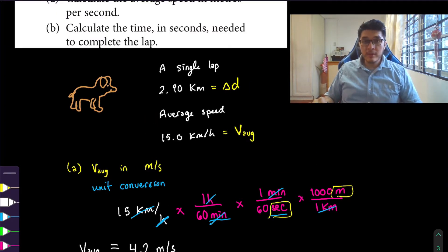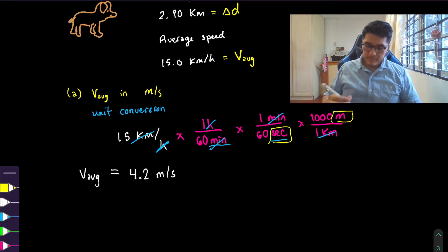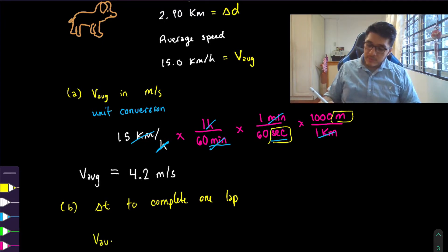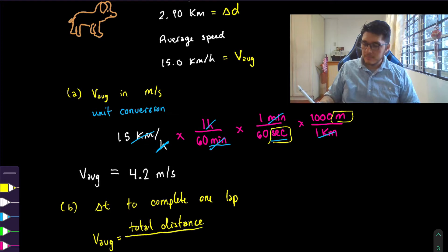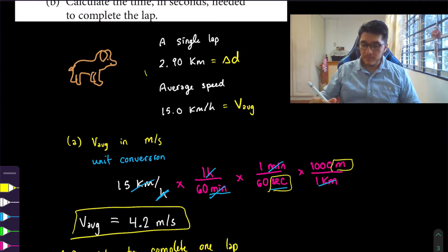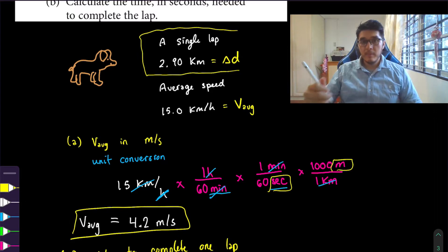For part b, they want us to calculate the time in seconds needed to complete the lap. We want to find the change in time. We know the formula for average speed is total distance over total time. We know the average speed is 4.2 meters per second from before, and the distance to complete a single lap is 2.9 kilometers — but we need to do another unit conversion to get it into meters.